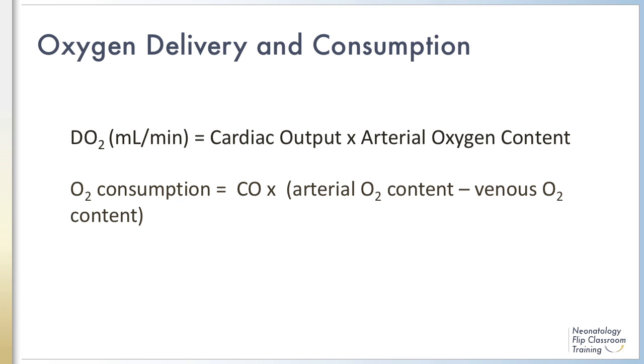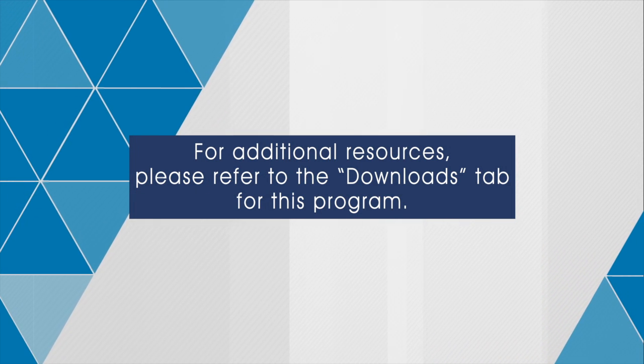So in this module, we discussed oxygen delivery and consumption, and I showed you how to calculate oxygen delivery and consumption. Here are the two equations. The factors that are important are the cardiac output, the arterial oxygen content for the oxygen delivery, and for oxygen consumption, both the arterial oxygen content and the venous oxygen content. This concludes Module 4. Thanks for your attention.